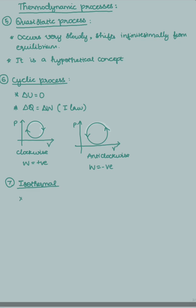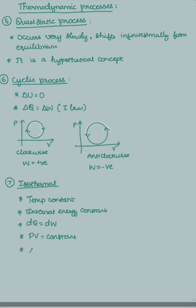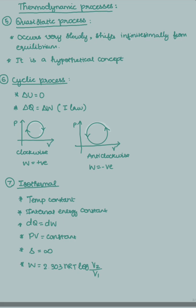Next is the isothermal process, where temperature is constant. Since temperature is constant, internal energy is also constant, so ΔQ equals ΔW. The corresponding gas law for the isothermal process is Boyle's law: PV equals constant. For this process, specific heat capacity will be infinite, since specific heat capacity is Q by (m ΔT) and here ΔT is zero, making it infinite. Work done in an isothermal process is 2.303 NRT log(V2/V1), where N indicates number of moles.